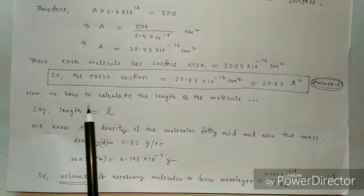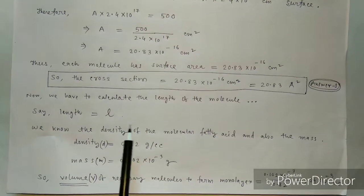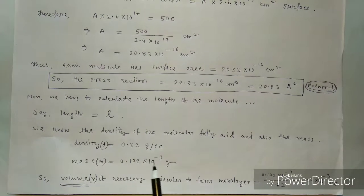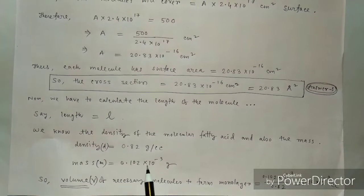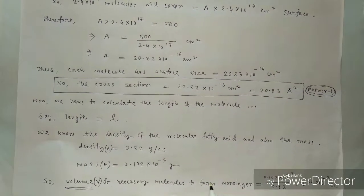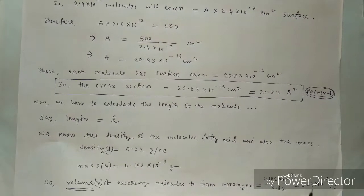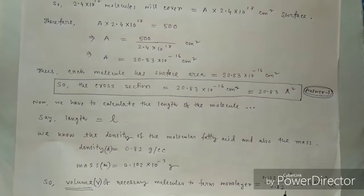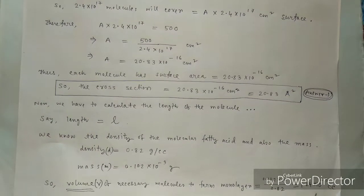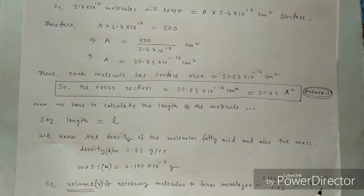Now we want to calculate the length L of the molecule — the fatty acid. We know the density is 0.82 gram per cc and the mass is 0.102 × 10⁻³ gram. From density and mass we can calculate the volume of the molecules forming the monolayer: Volume = mass / density = (0.102 × 10⁻³) / 0.82 = 1.24 × 10⁻³ cc.